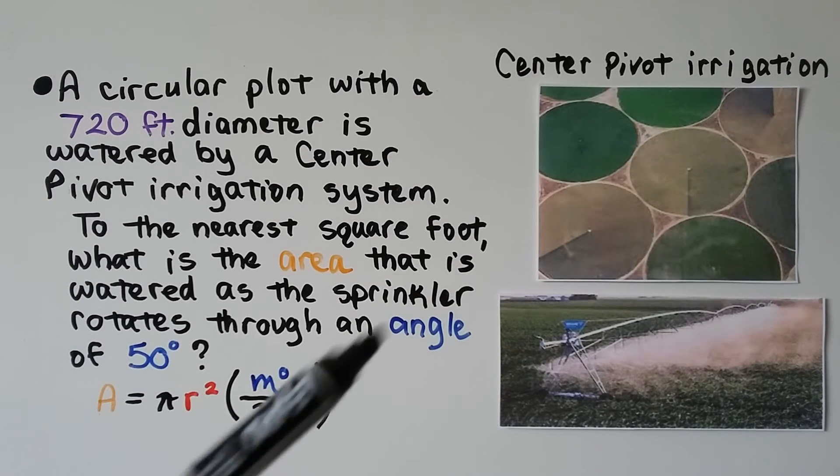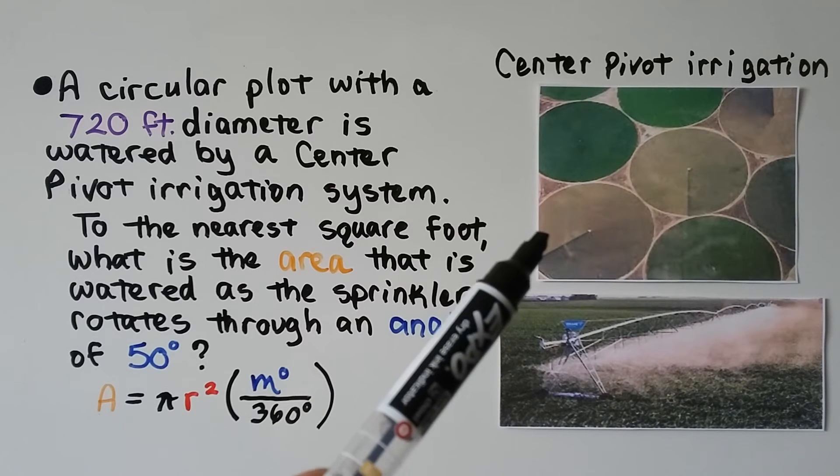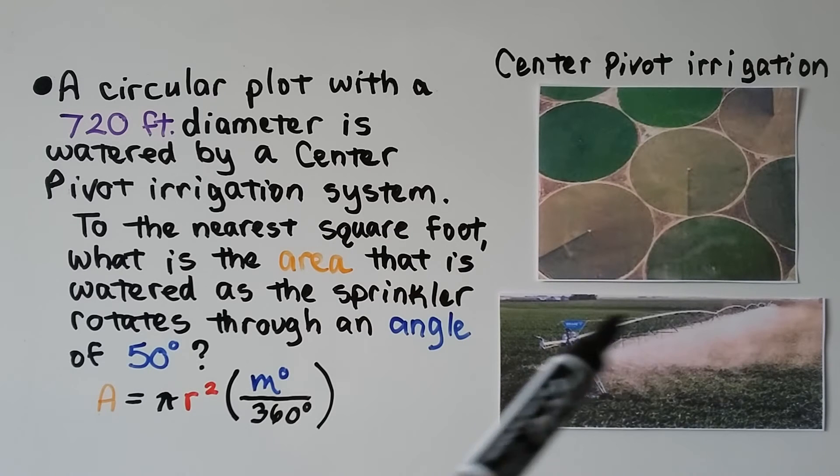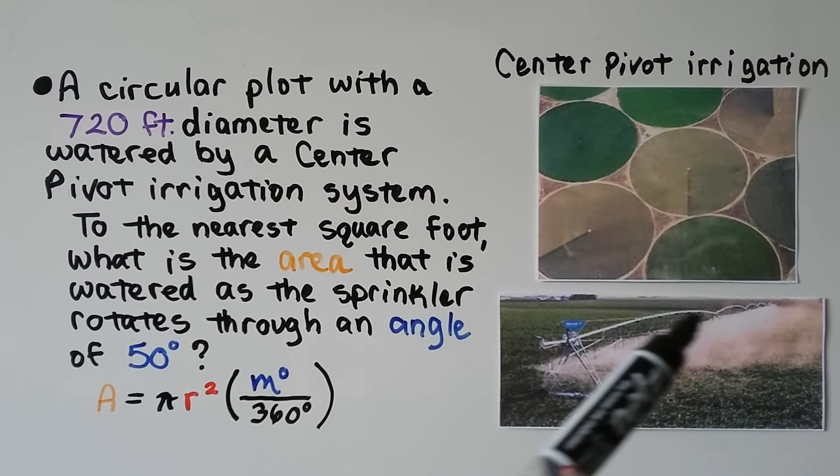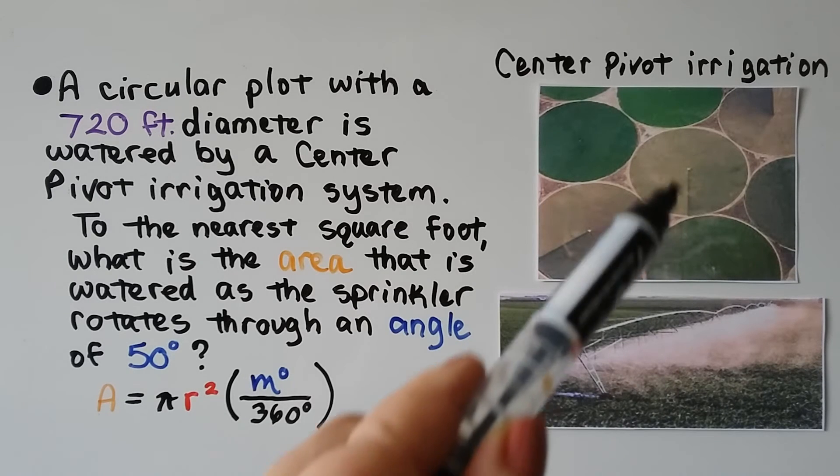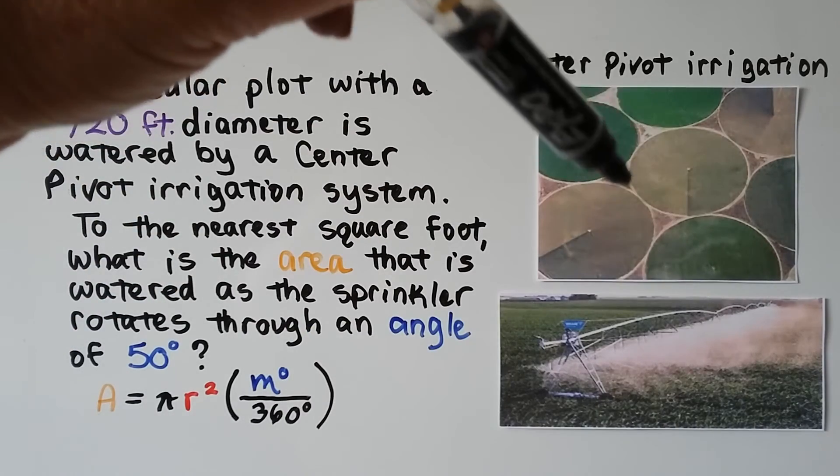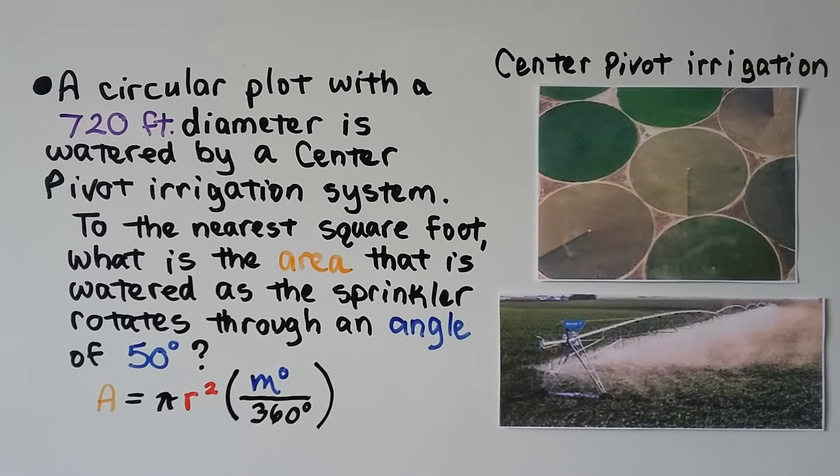Now before we look at this, let's look at the diagrams here. This is center pivot irrigation. This long irrigating watering mechanism is pivoting around this point in the center, and it's on wheels and it goes around and waters this circle-shaped plot.